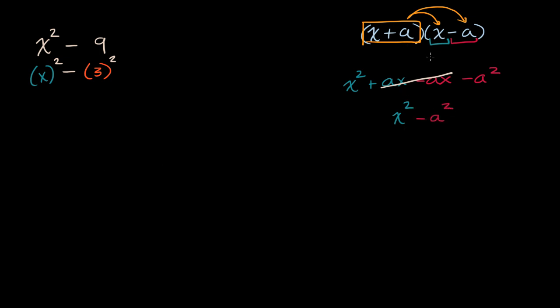So we have an interesting result here: x squared minus a squared is equal to x plus a times x minus a. This is for any a, so we can use this pattern to factor.